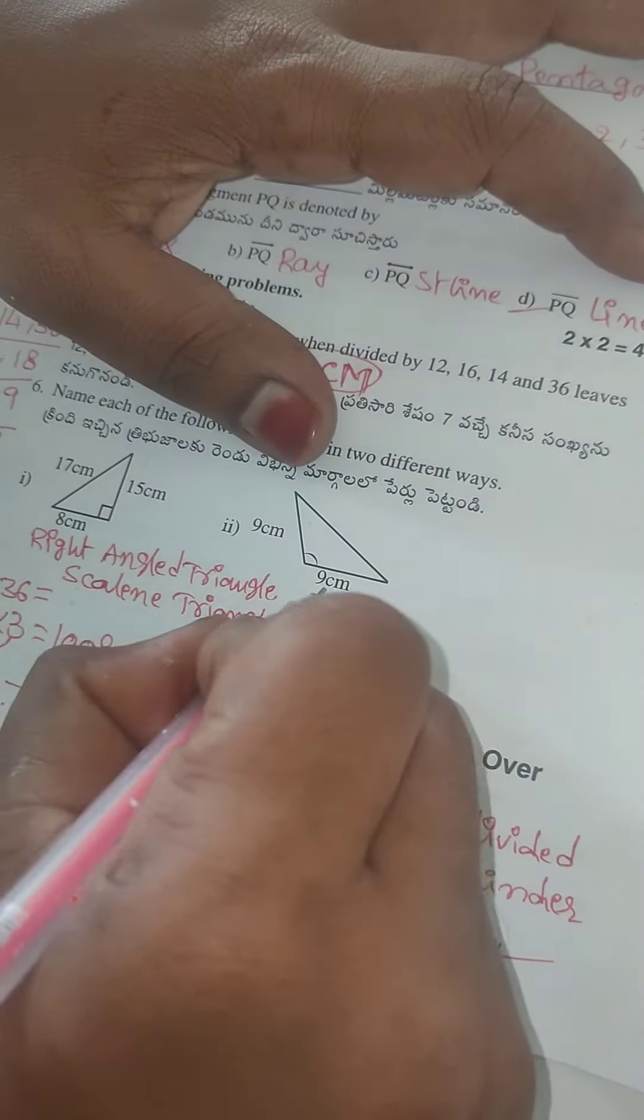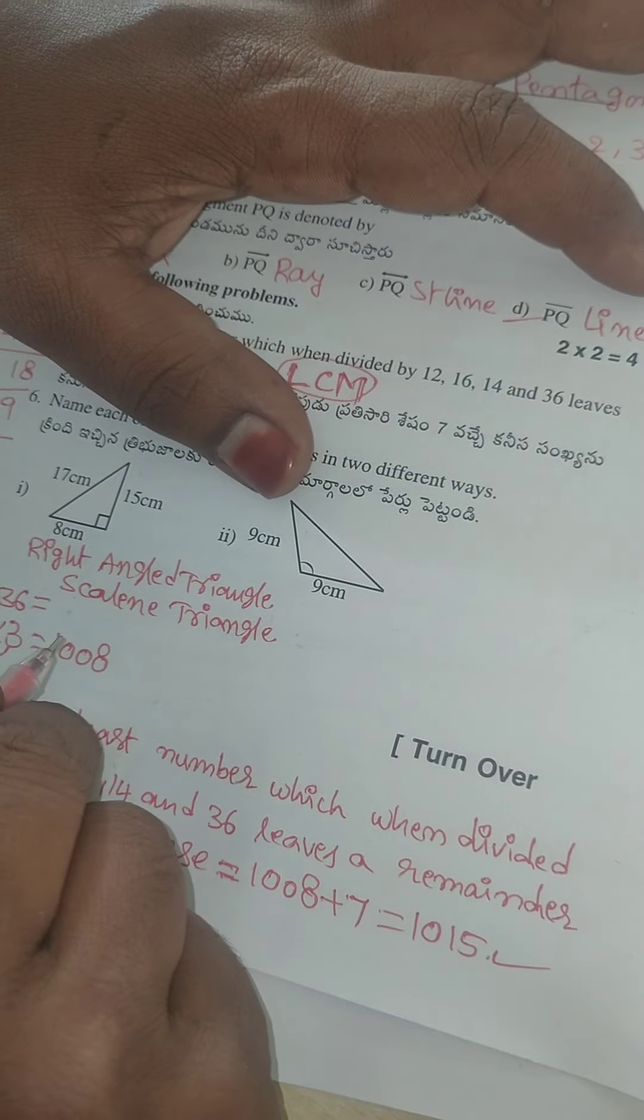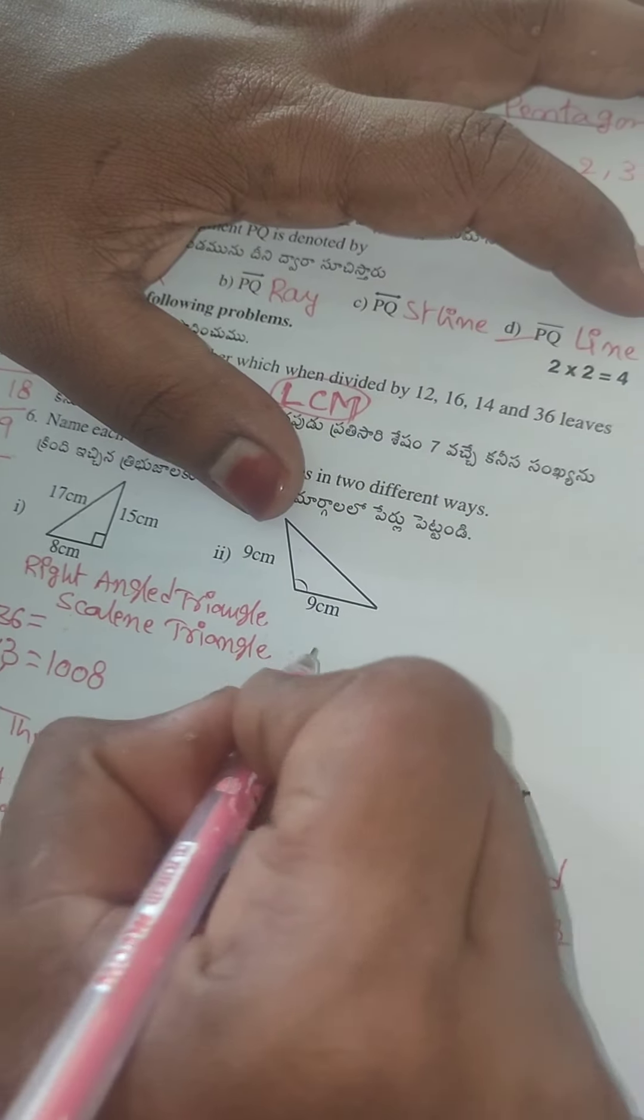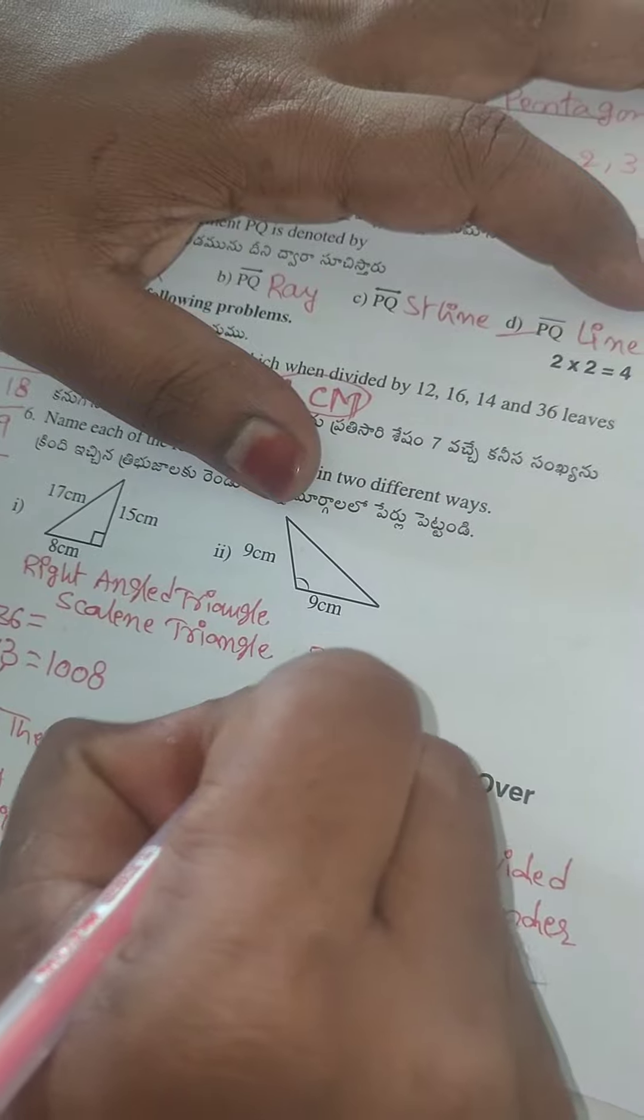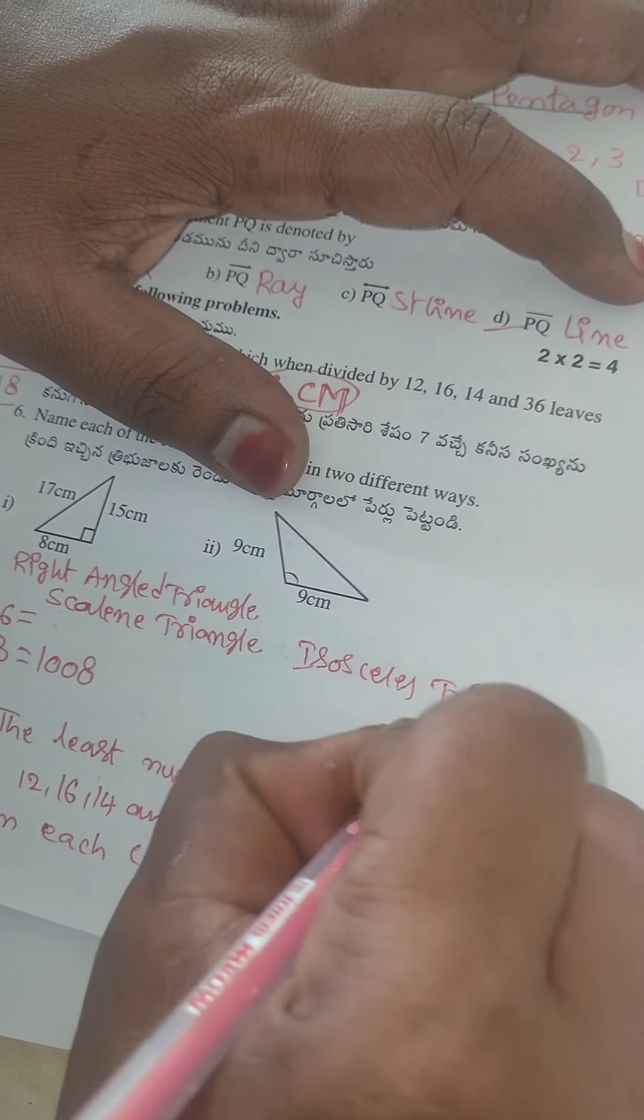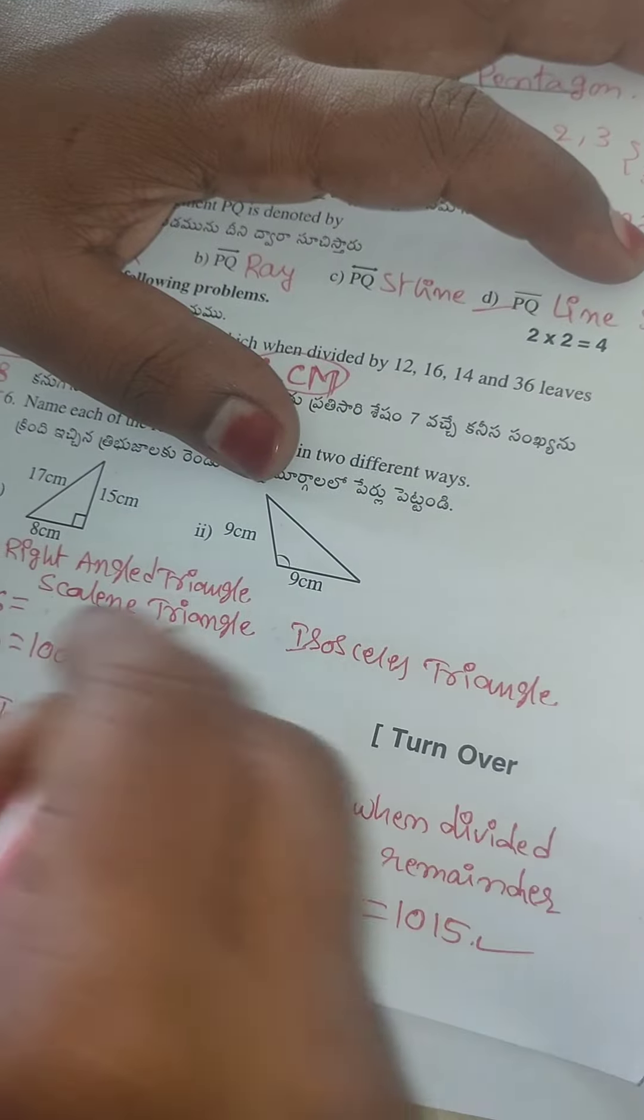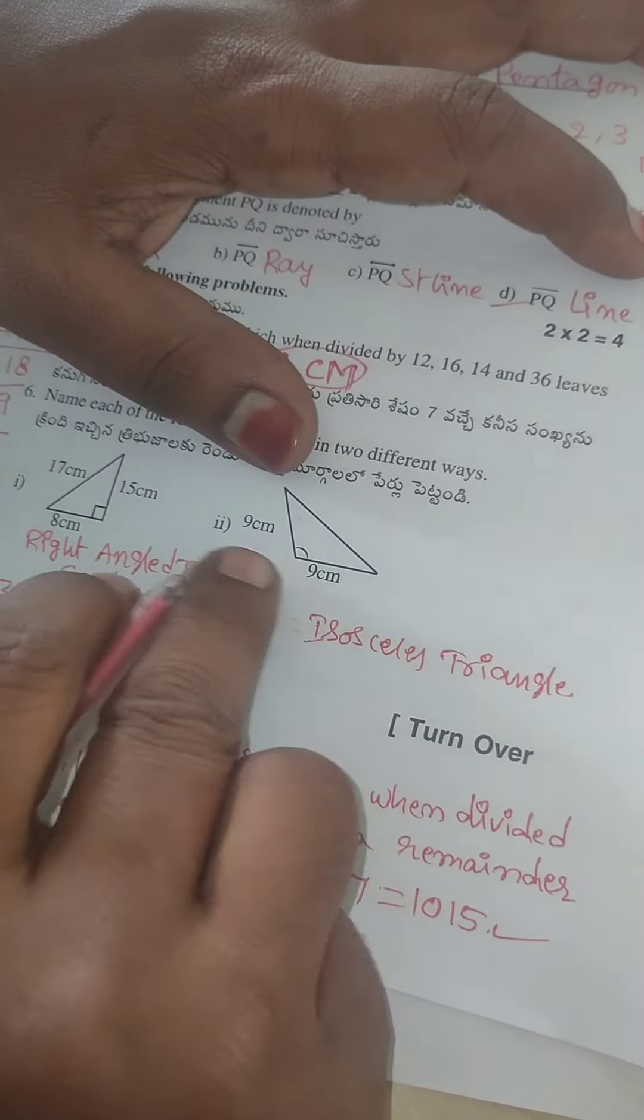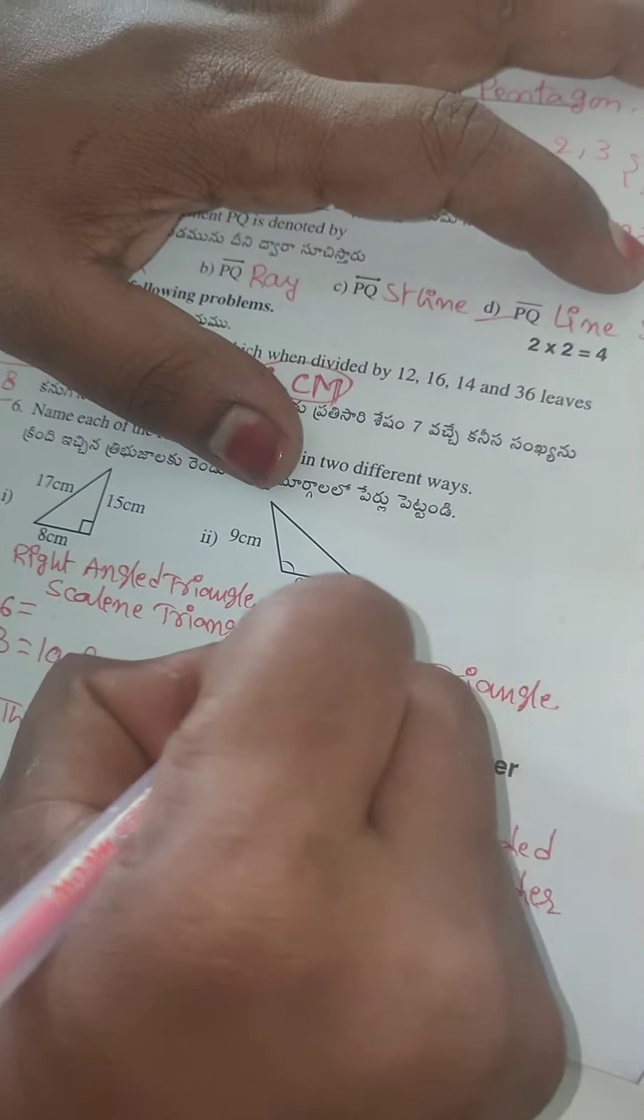Come to the second problem. These two sides are equal, so this is isosceles triangle. Angle is greater than 90 degrees, so this is obtuse angle triangle.